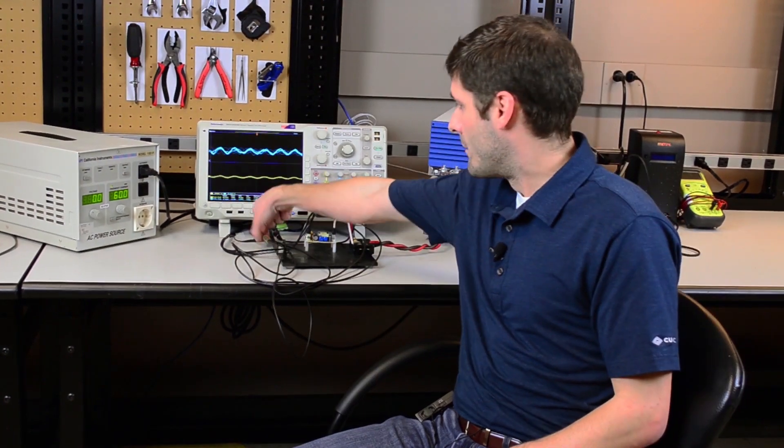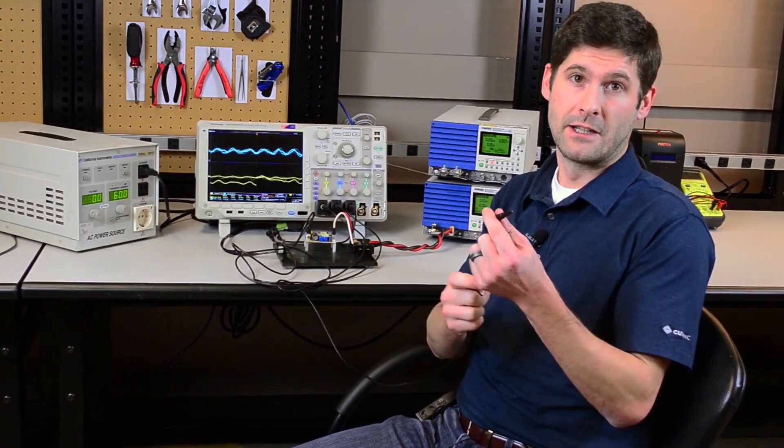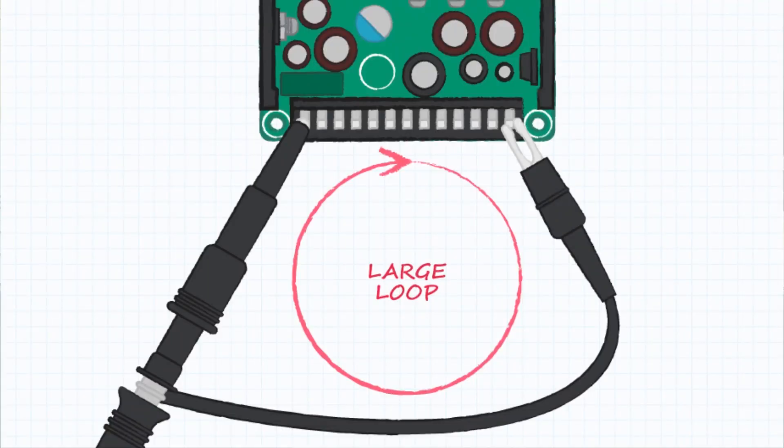This is generally done first by avoiding the use of the ground clips and leads that come with the oscilloscope probes.